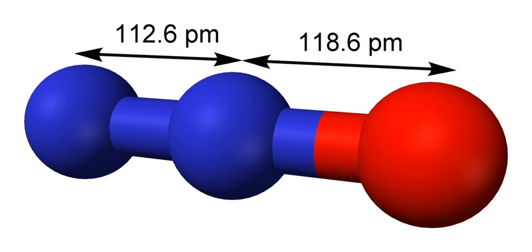2 NH3 plus 2O2 gives N2O plus 3H2O. Hydroxylammonium chloride reacts with sodium nitrite to give nitrous oxide.